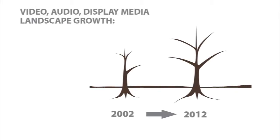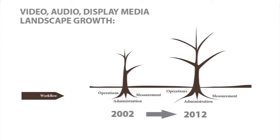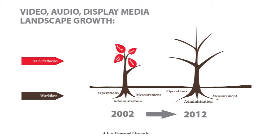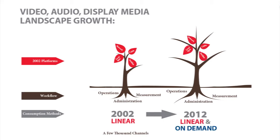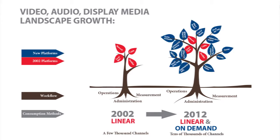So why do we need it? It used to be very simple. We had linear media and we had to do operations, administration, and measurement on a few platforms — pretty simple, all those little leaves in red. Now we have on-demand media, tens of thousands of channel choices, and the same media is consumed not just in those few little red leaves, but in the dark blue leaves and future platforms we haven't even thought of yet, where video content will be consumed.